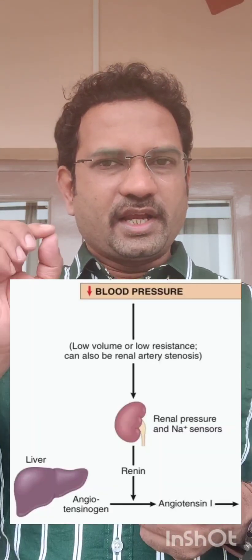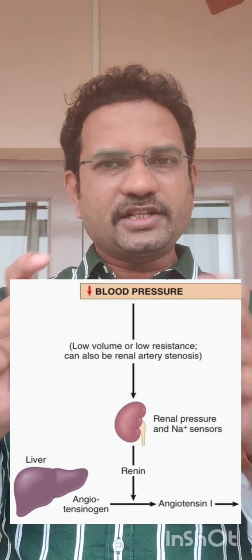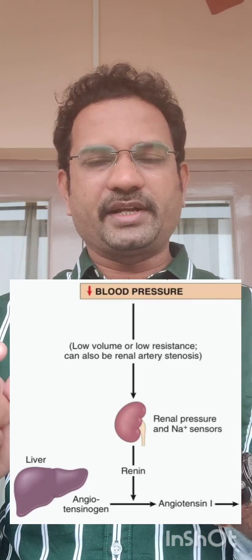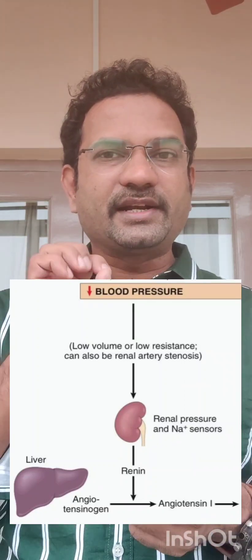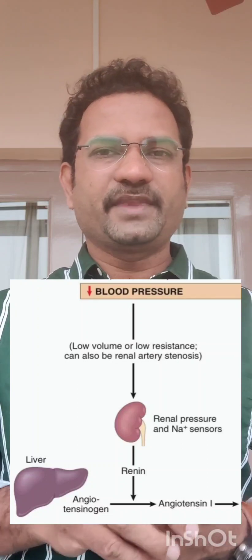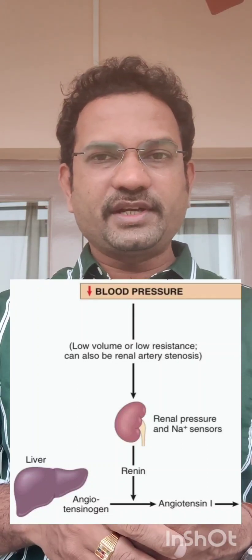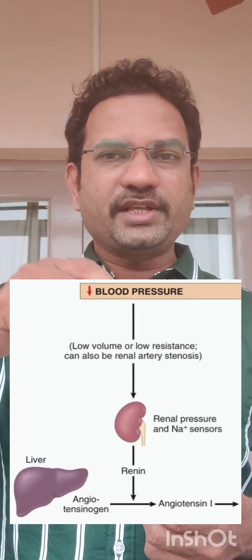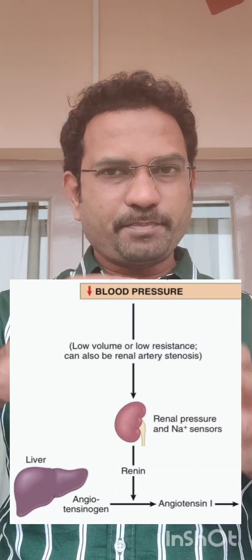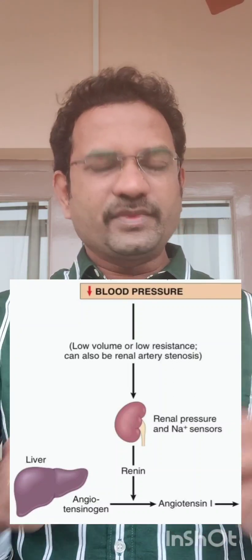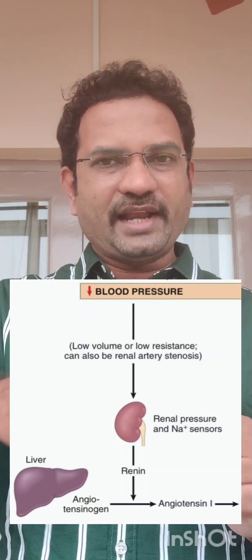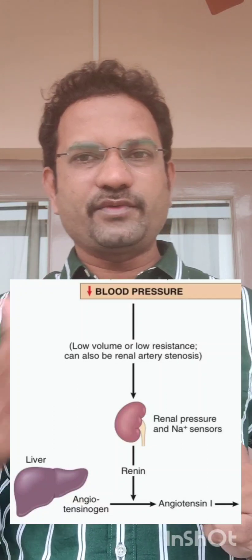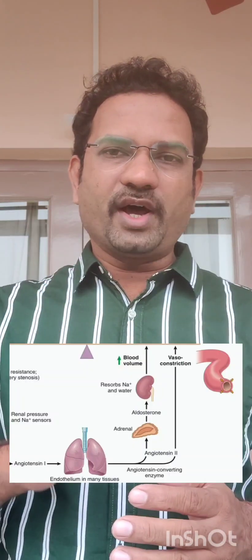Whenever there is reduced blood pressure, it is sensed by the kidney. There are special structures called the juxtaglomerular apparatus. Through this apparatus, the kidney senses low blood pressure and releases renin. So renin is released by the kidney. Now, what is the job of renin? Renin acts on angiotensinogen, which is a peptide released from the liver.